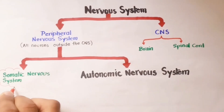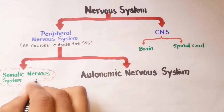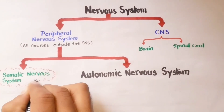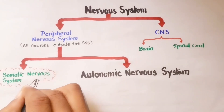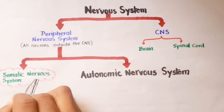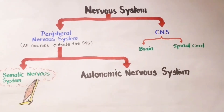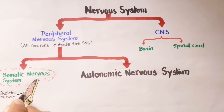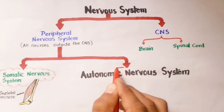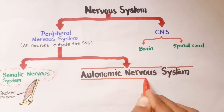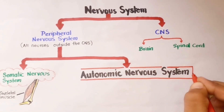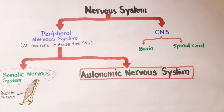The somatic nervous system is concerned with the voluntary movements of our body and innervates the skeletal muscles of our body. On the other hand, we have the autonomic nervous system, about which we are going to discuss briefly.